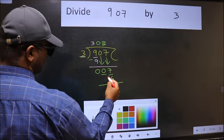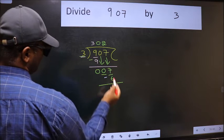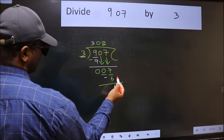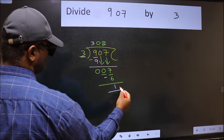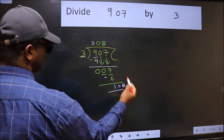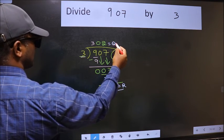Now we should subtract. We get 1. No more numbers to bring down, so we stop here. This is our remainder and this is our quotient.